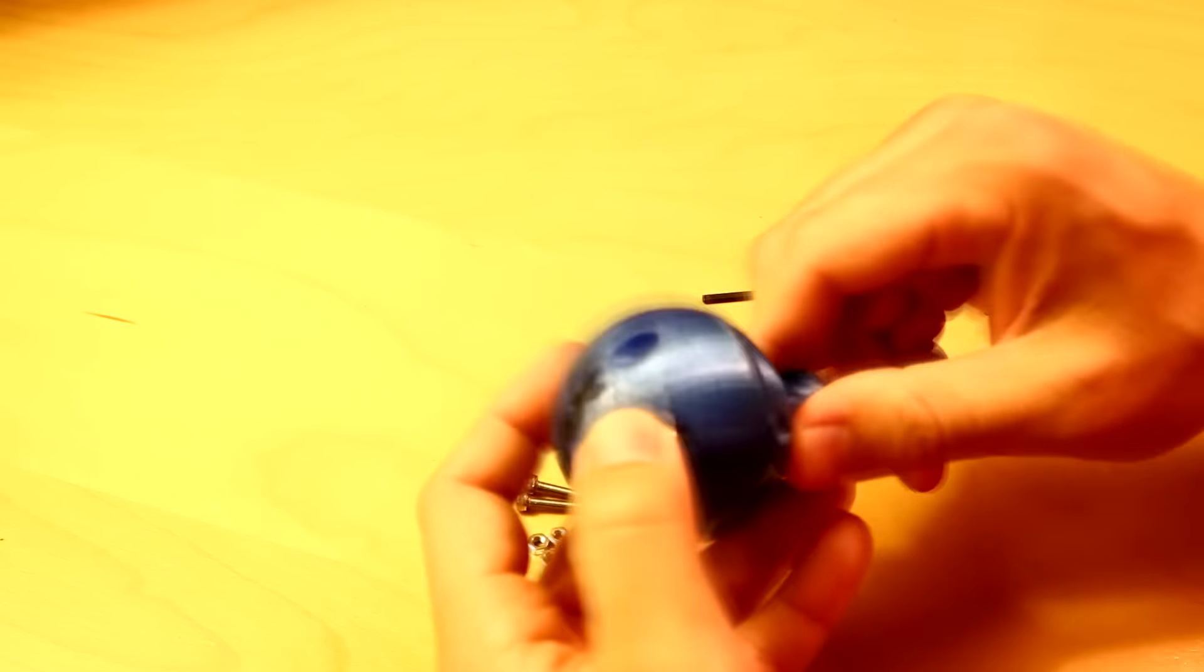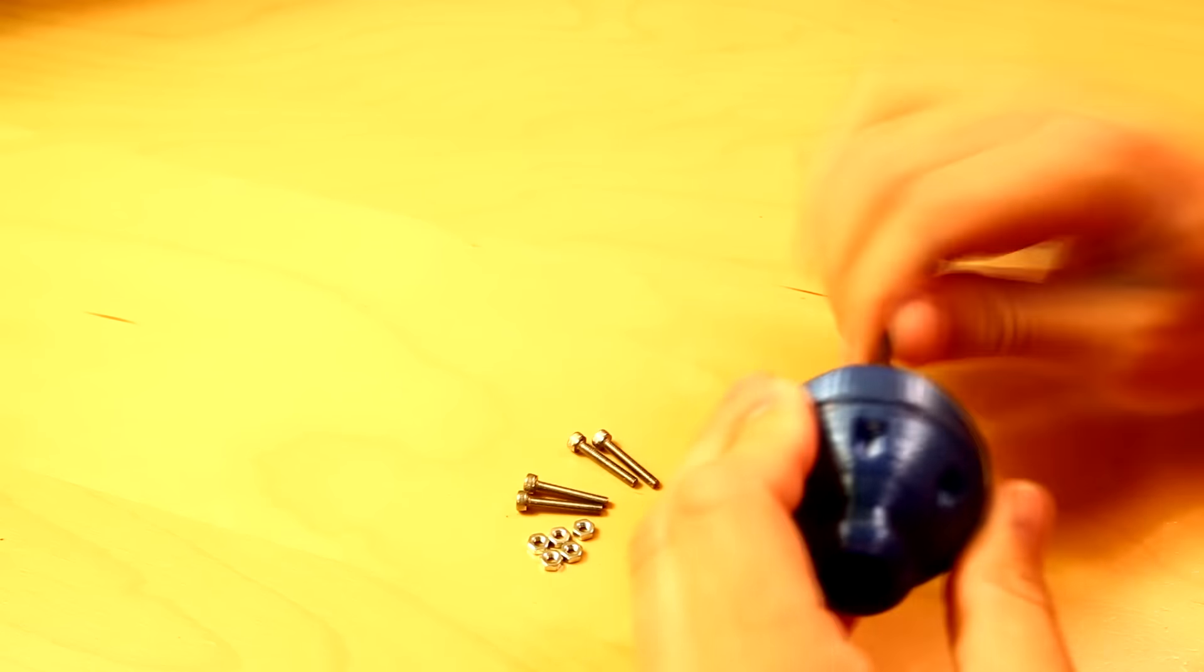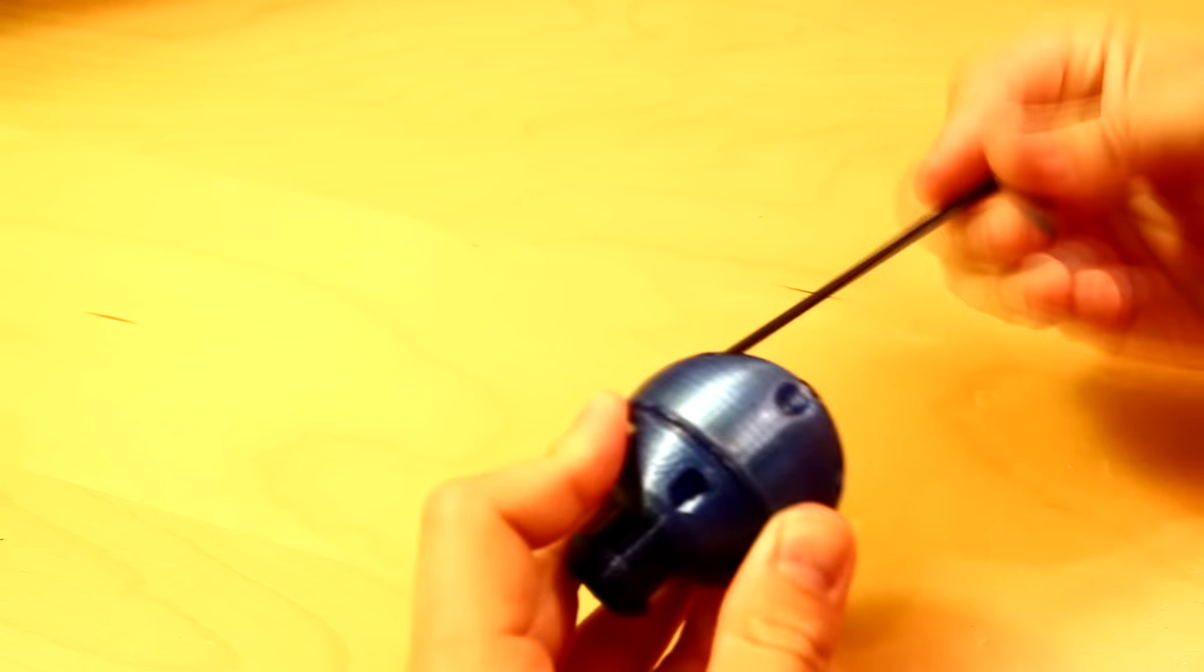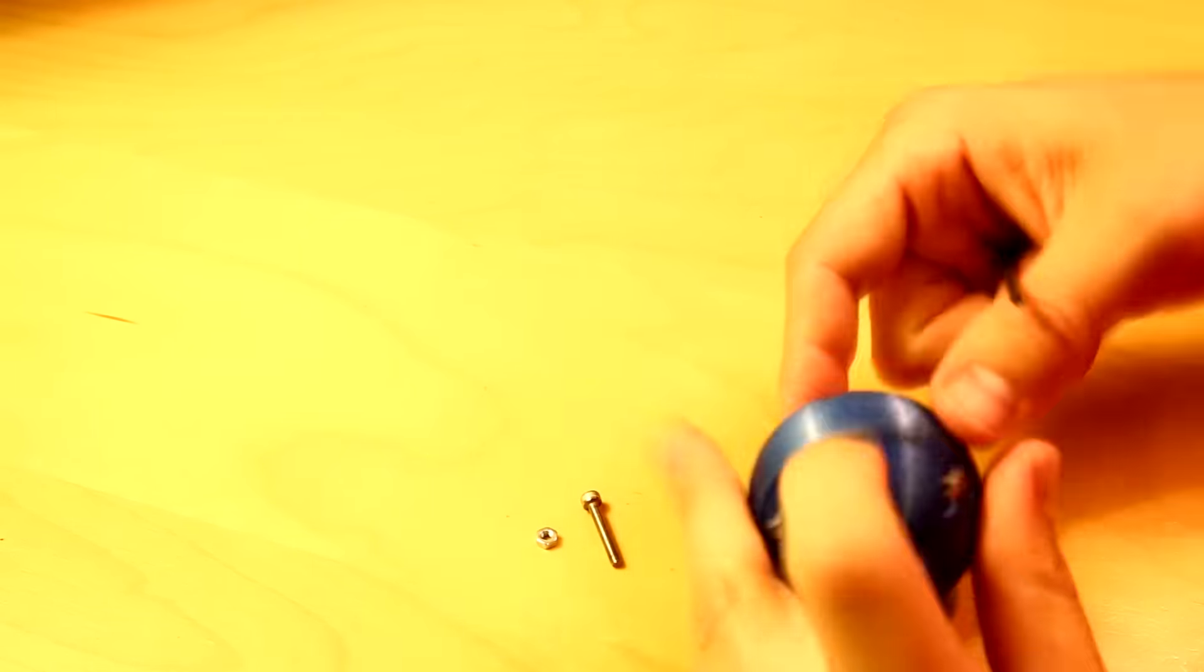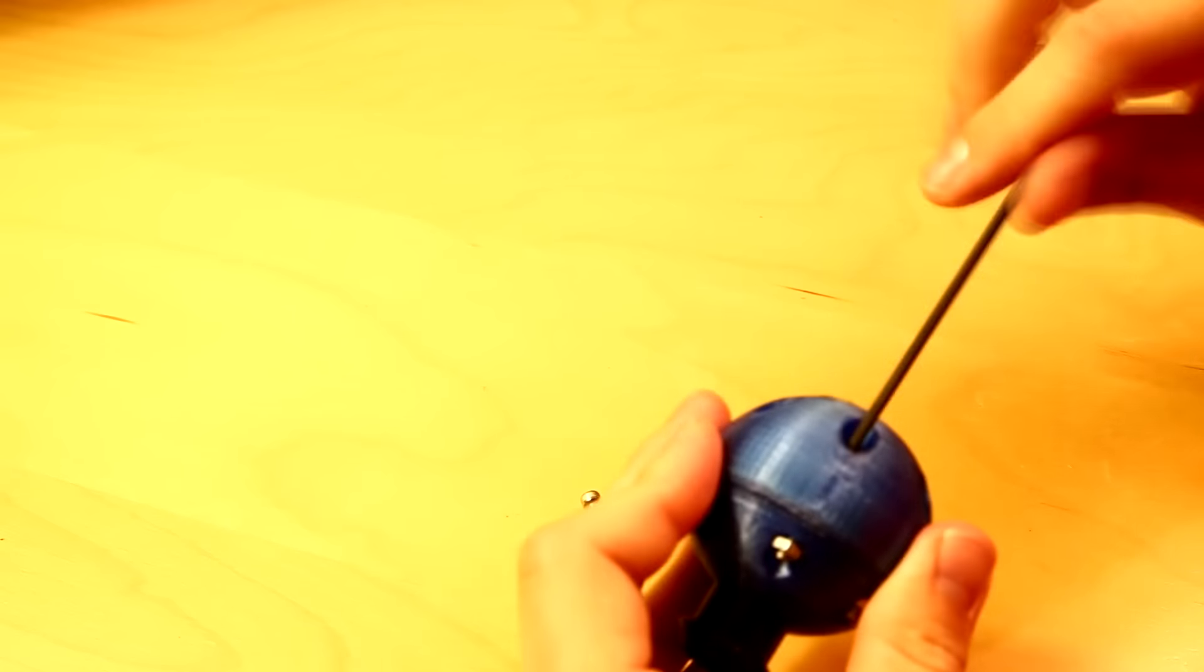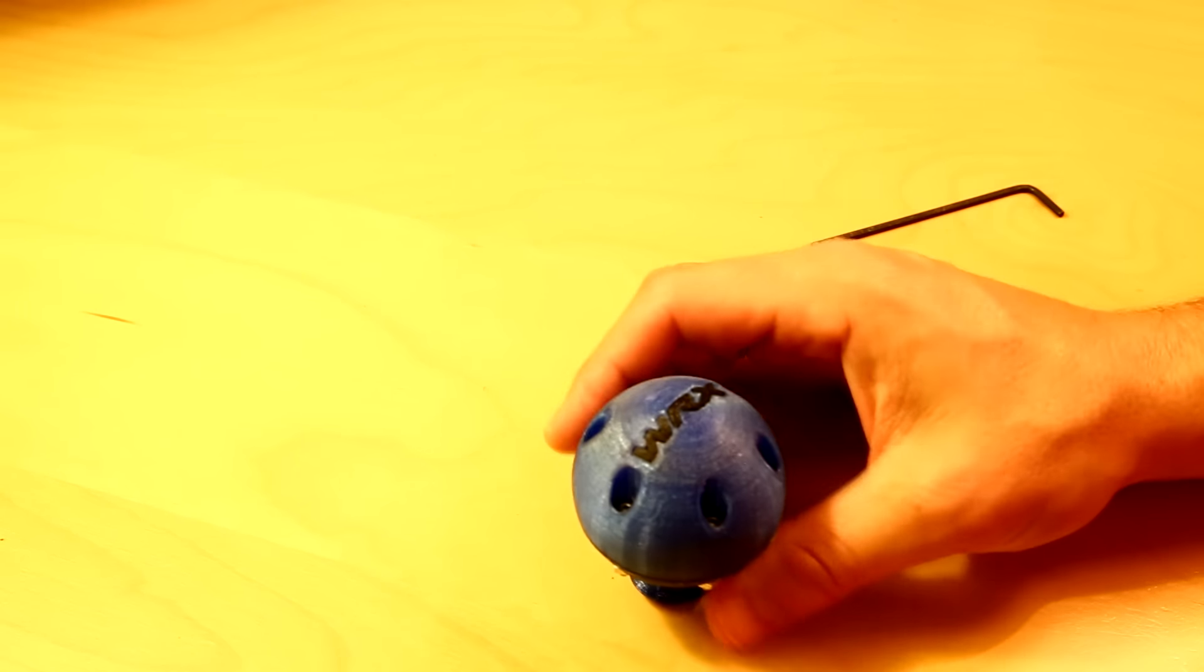After I got the first one, I repeated this for the next 5 bolts, tightening them in a star pattern to make sure it was nice and level. When they were all installed, I went back and finished tightening them all the way. And now, I have a cool custom shift knob.